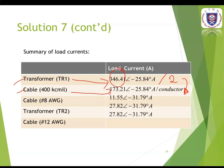Cable 8 AWG is 11.55 amps. Transformer TR2 is 27.82. Because the current flowing from transformer TR2 is the same as the cable for 12 AWG, the load current is the same.